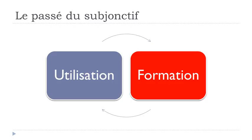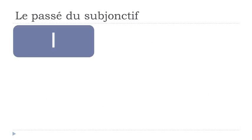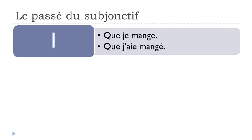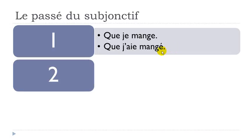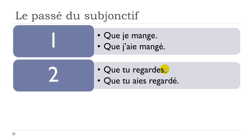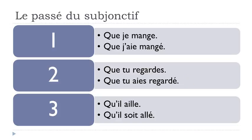Now let's see how to make this passé du subjonctif. Compare: que je mange (subjonctif présent) versus que j'ai mangé (passé du subjonctif). Second example: que tu regardes (subjonctif présent) versus que tu aies regardé (subjonctif passé). Third example: qu'il aille — the verb aller, subjonctif présent — versus qu'il soit allé (subjonctif passé). You can spot that in the first two cases we have avoir, and in the third case we have être, both at the subjonctif présent form, followed by the participe passé.